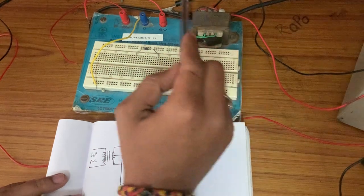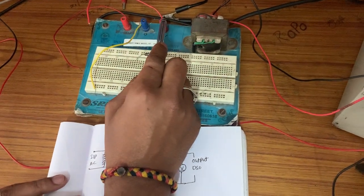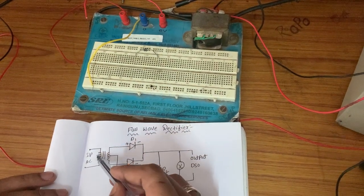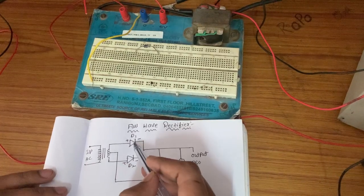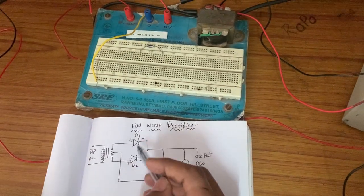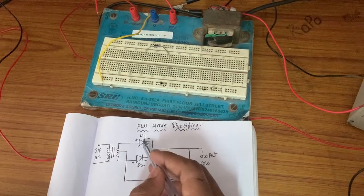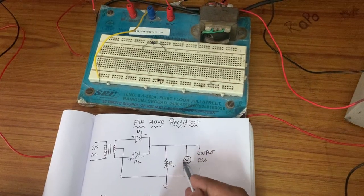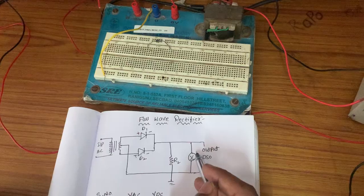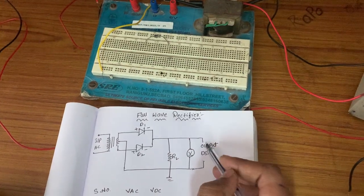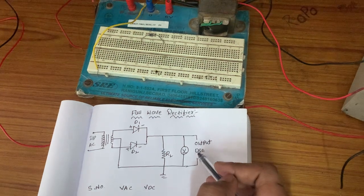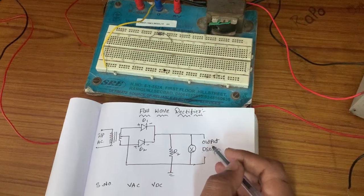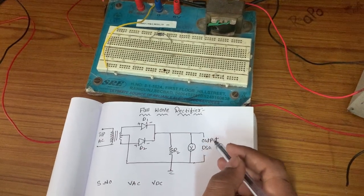The center-tap transformer has three terminals: 1, 2, and 3. Now if you see the circuit diagram again, first there is a transformer, then there are two diodes D1 and D2. In the half wave rectifier we used only one diode, but here we use two diodes as it is a full wave rectifier. This is the load resistance, and this is the multimeter used to find out the voltage. This is the DSO terminal — we are using a digital storage oscilloscope, which is used to observe the input and output waveforms.